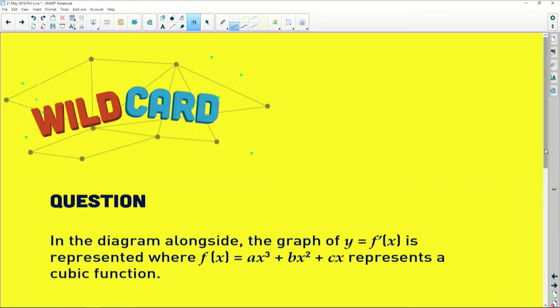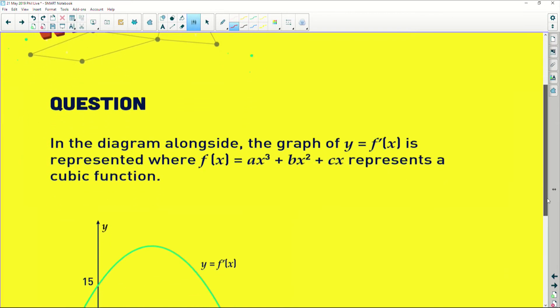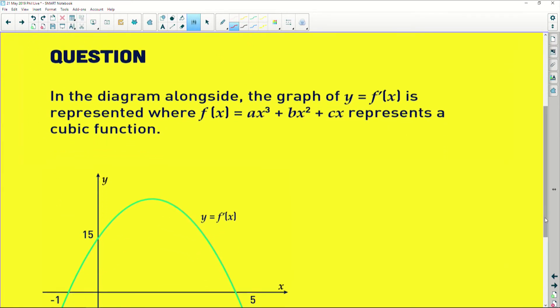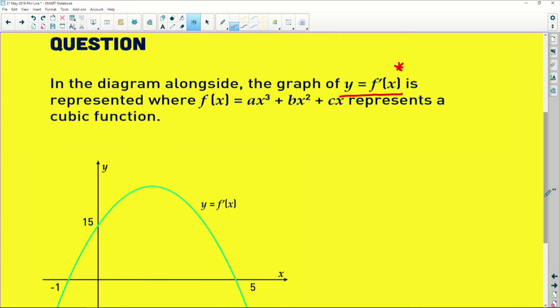It says, in the diagram alongside, ours is below, the graph of y equals f prime of x, big warning sign there, it's f prime of x, not f of x, is represented where f(x) is equal to ax cubed plus bx squared plus cx represents a cubic function. Okay, so that is the original function.